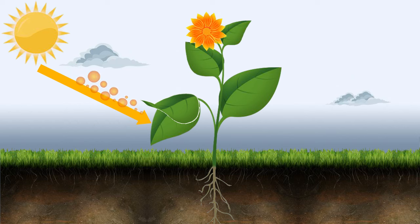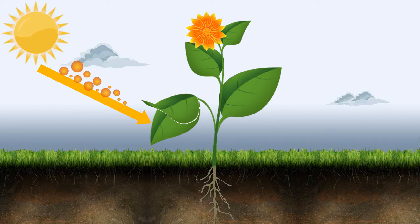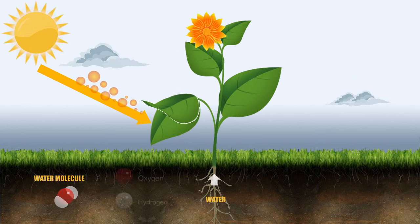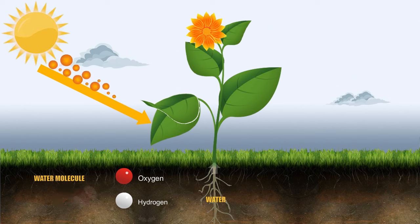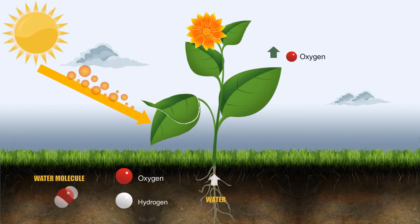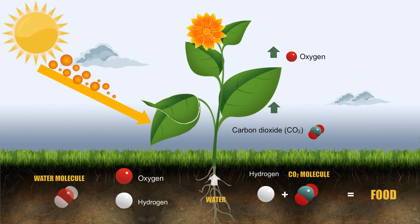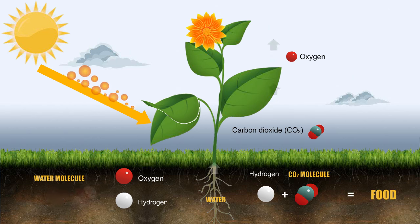Chlorophyll absorbs the sun's energy. This energy is used to split water molecules into hydrogen and oxygen. Oxygen is released from the leaves into the atmosphere. Hydrogen and carbon dioxide are used to form glucose, or food for plants.